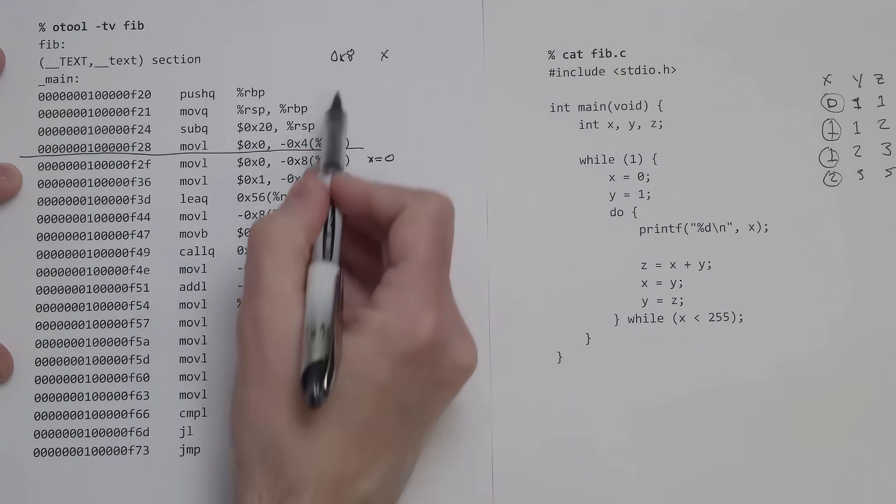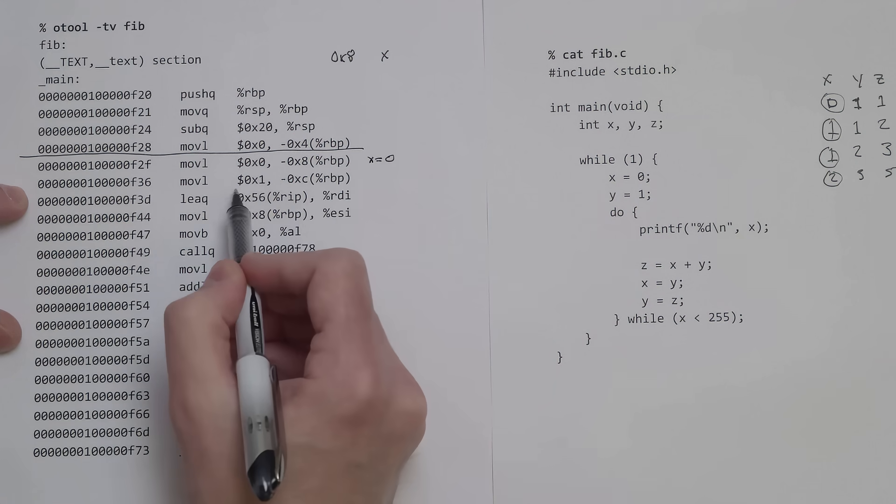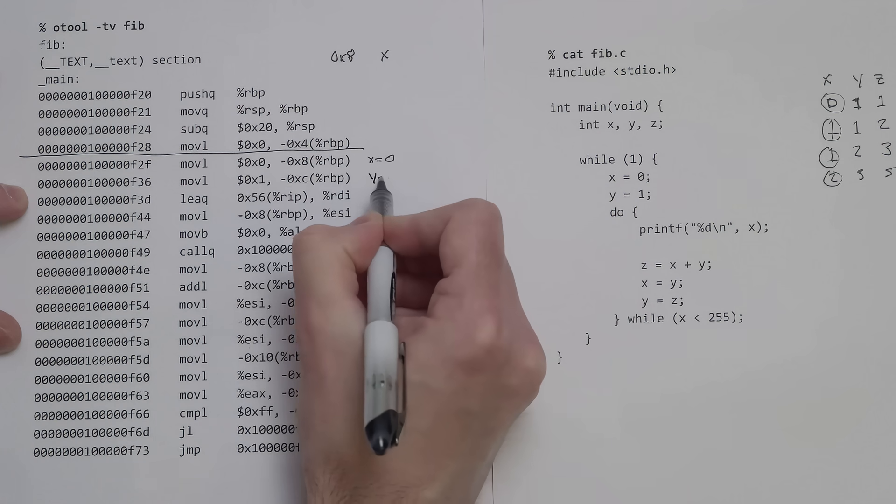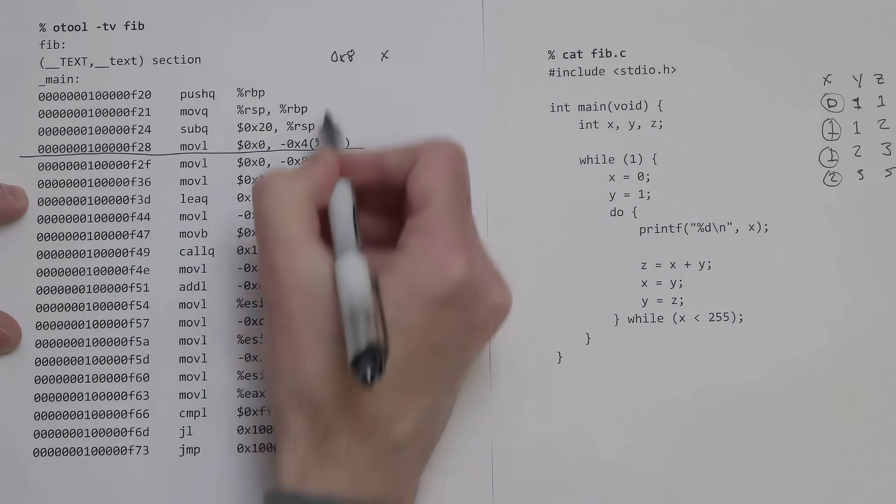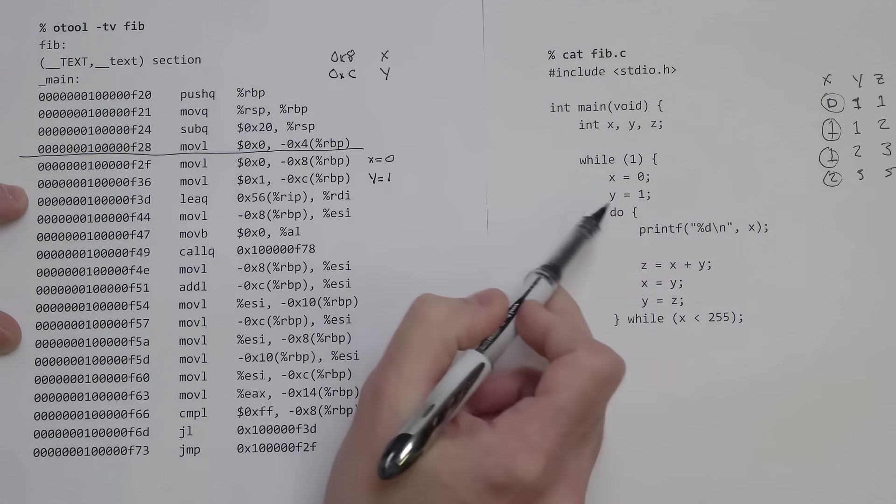The next line is basically the same thing, except now we're putting 1 into this 0xc location. So here we're saying y equals 1, and 0xc refers to the variable y in the program.